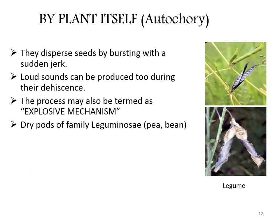When a plant disperses seeds by itself, it is called auto-dispersal. The plant disperses seeds by bursting with a sudden jerk — the fruit gets warped and shoots out its seeds into the external environment. This process may also be termed an explosive mechanism. This type of seed dispersal is mainly seen in plants having pods, for example peas, beans, etc.